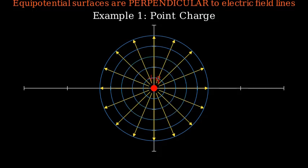Notice how at every point on a particular sphere, the potential is the same. And as you can see, the electric field lines are always perpendicular to these equipotential spheres. This is a fundamental property that holds true for all electric field configurations.